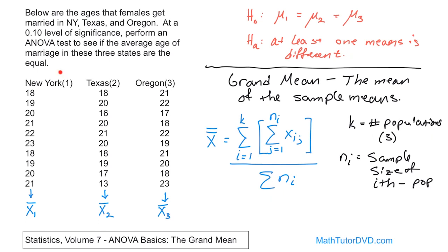When we do ANOVA, I'm using the same number of samples here, but you could take seven samples from New York, eight from Texas, and ten from Oregon — N sub 1, N sub 2, and N sub 3 would just be different. The sample sizes don't have to be equal. Now it's time to figure out what this equation is really telling us.